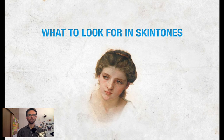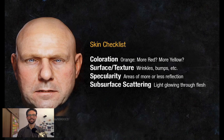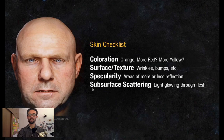Back to skin tones — this is the checklist I was referring to. The skin checklist has four items: coloration, surface or texture, specularity (how shiny or matte the surface is), and subsurface scattering — also called diffuse transmission. Let's take a look at each one, starting with coloration.